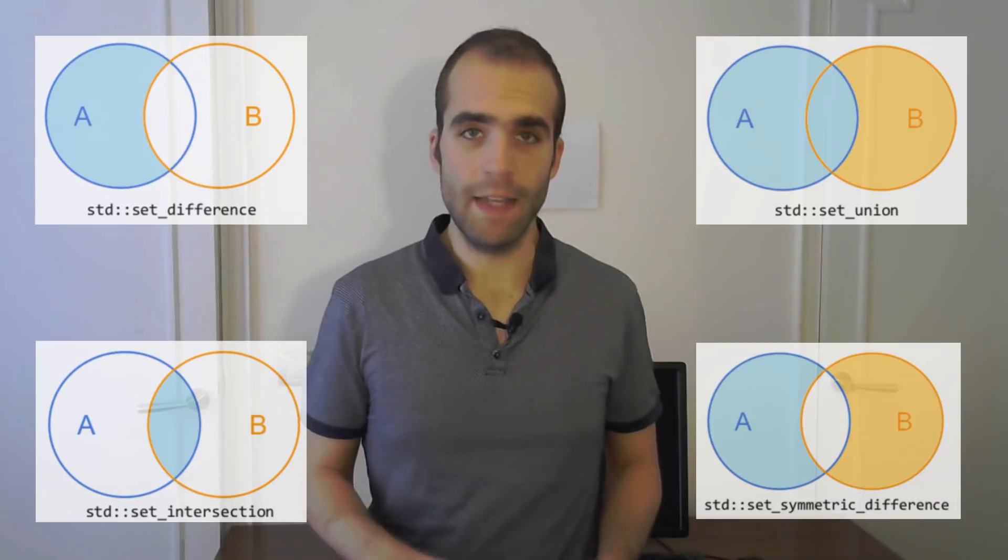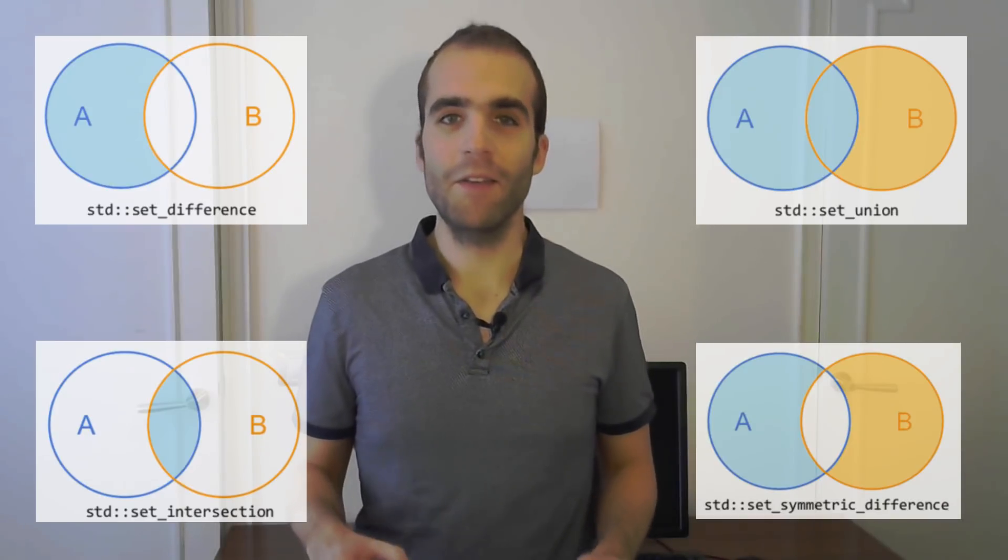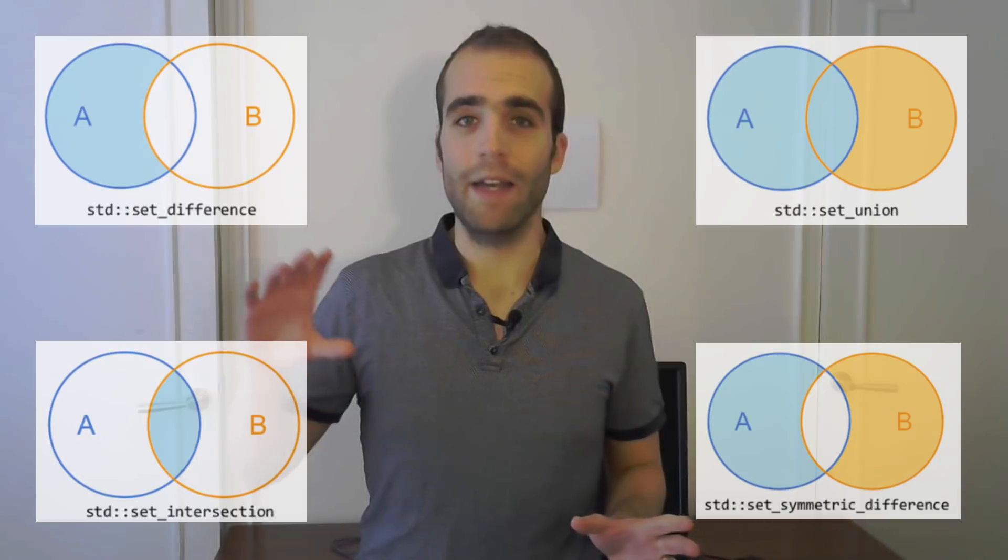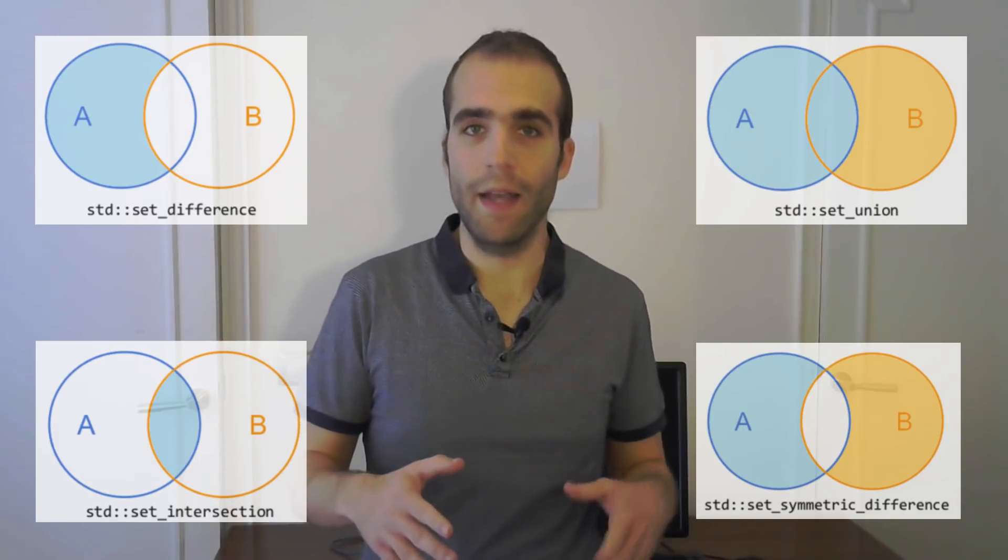And set_symmetric_difference gives you the elements that are in A and not in B, and in B and not in A.